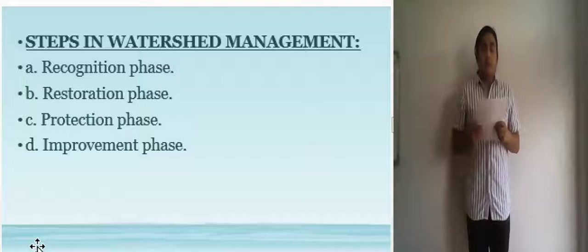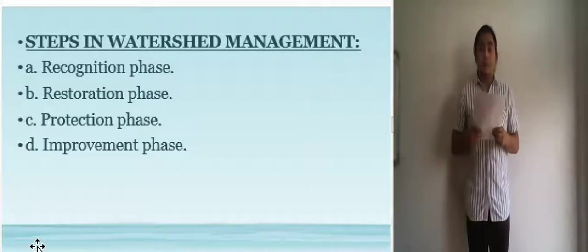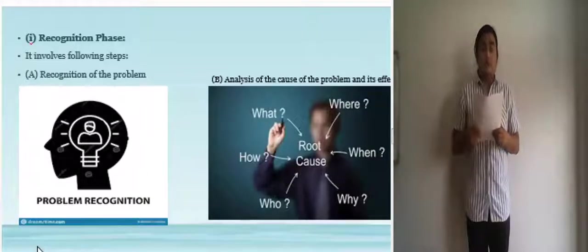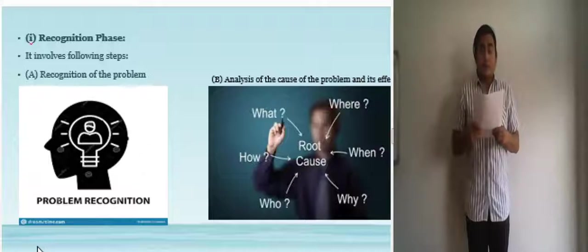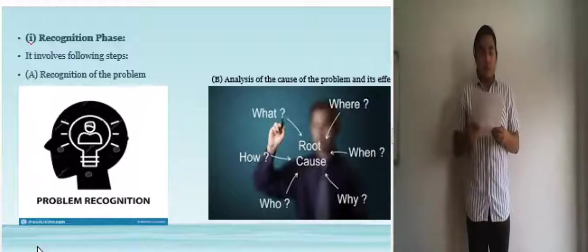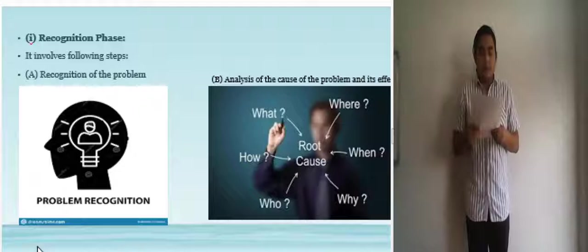Now there are four phases or steps in watershed management. These are recognition phase, restoration phase, protection phase and improvement phase. Now for the recognition phase, it involves two steps. The first one is the recognition of the problem. May it be small or big, all problems must be faced directly to avoid future problems.